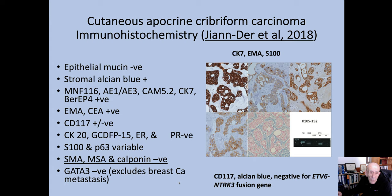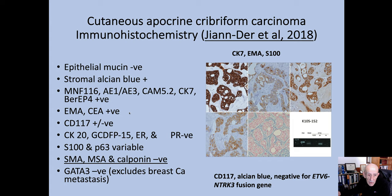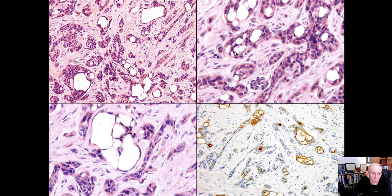For immunohistochemistry of apocrine cribriform carcinoma, the most useful marker is probably GATA-3: if it's negative, you've pretty well excluded a breast carcinoma. EMA and CEA will help pick up glandular differentiation, though it's so morphologically obvious I'm not sure you'd need it. I'm much more concerned about whether it's primary or secondary. Here's another case from Eduardo Colongi — it looks like an apocrine carcinoma, not desperately pleomorphic, with a lovely cribriform field, and EMA positive.